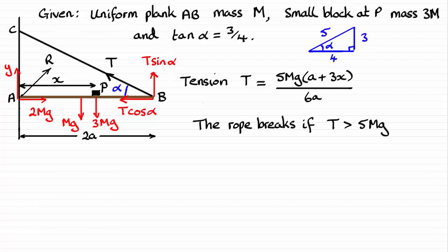So that means then that if the rope is not to break, that tension T must be less than or equal to 5mg. And we found out in the first part of the question that T was given by this equation here. So all I've got to do is substitute this result into this inequality here and solve it for x.